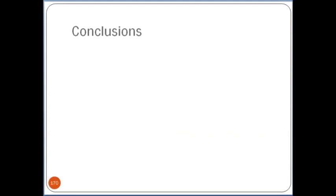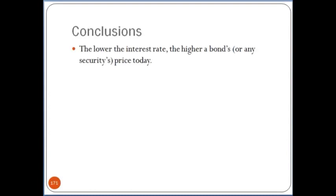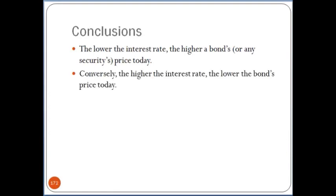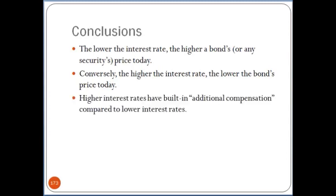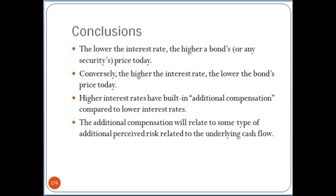That's all I want to say about interest rates here — we'll explore them a little more in the next module, which is actually when the readings are assigned. I wanted to address it here because I've been talking about interest rates without having unpacked them at all. Some conclusions on bonds and interest rates: the lower the interest rate or discount rate, the higher a bond's — or really any security's — price today; conversely, the higher the interest rate, the lower the bond price. They move in opposite directions. High interest rates have built-in additional compensation compared to lower interest rates, and that additional compensation relates to some type of additional perceived risk related to the underlying cash flow.